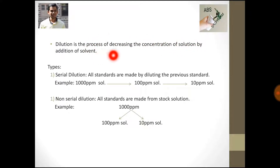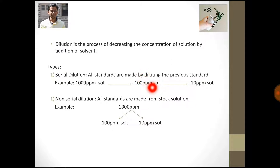Whatever the solution of desired concentration we want, we have to add the solvent in it to decrease the concentration of that solution. For example, if I want to prepare a 100 ppm solution from a 1000 ppm solution.